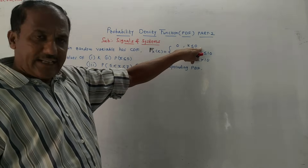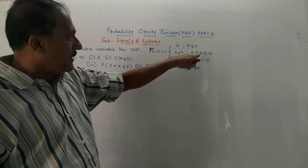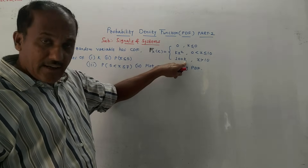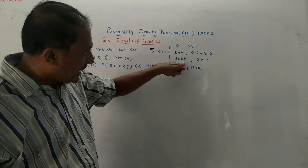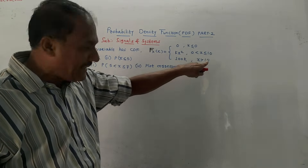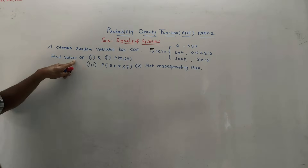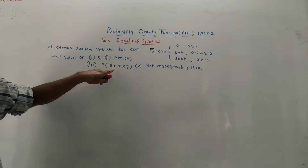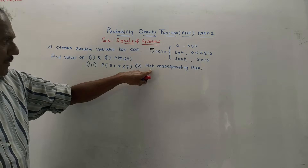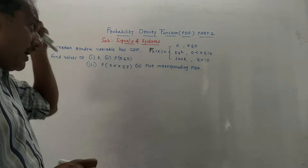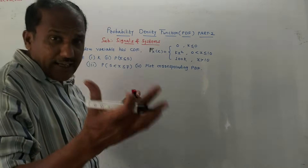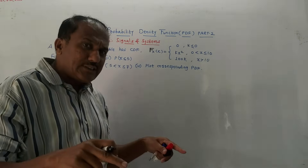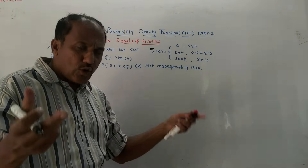The first problem: a certain random variable has a CDF. The given values are: 0 for X less than or equals to 0; K·X² when X is between 0 to 10; and 100K for X greater than 10. Find: the value of K, probability X less than or equal to 5, probability between 5 to 7, and plot the corresponding PDF.